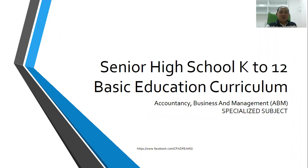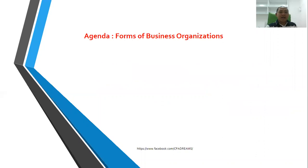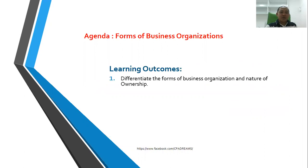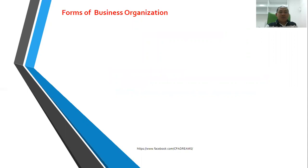This is for senior high school K-12 basic education curriculum students, especially those taking specialized subjects in ABM — Accountancy, Business and Management. This will be useful to you as a foundation if you plan to take the Bachelor of Science in Accountancy. Our agenda for today is Forms of Business Organizations. Learning outcomes: we will define different business organizations, differentiate them, and give their advantages and disadvantages. This will also help if you are planning to start your own business.